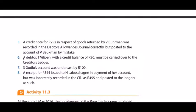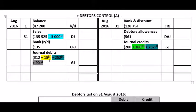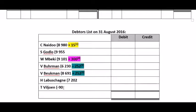Adjustment 6: A debtor with a credit balance of 90 Rand must be carried over to the creditors ledger. We actually owe this person money, so we want to take them out of the debtors ledger and put them in the creditors ledger. Because they have a credit balance, we debit their debtors control account and credit creditors control — done in the general journal. Therefore total journal debits increase by 90 Rand, and in the list we add another 90 Rand to bring their account to zero.